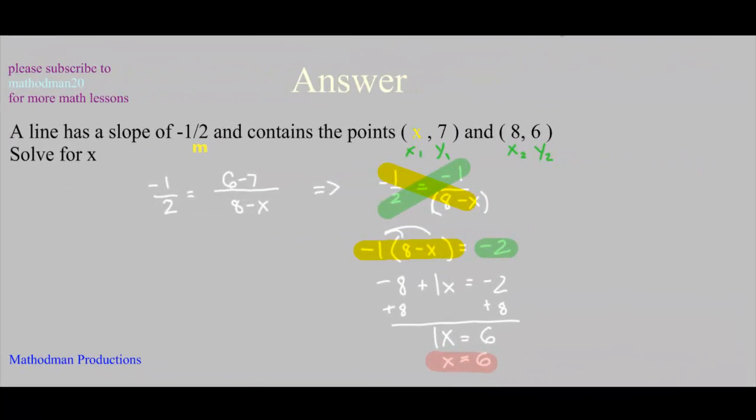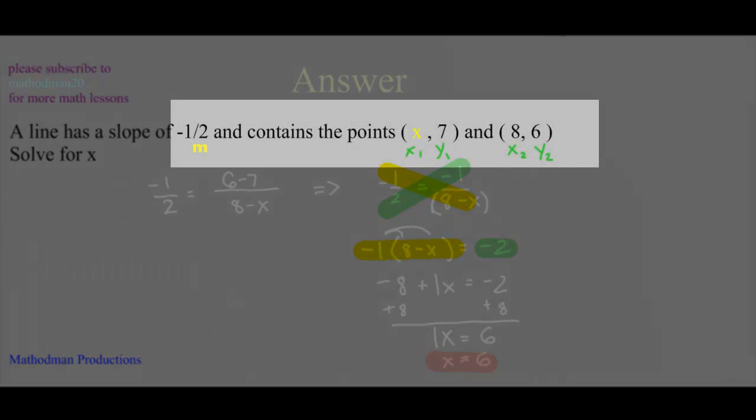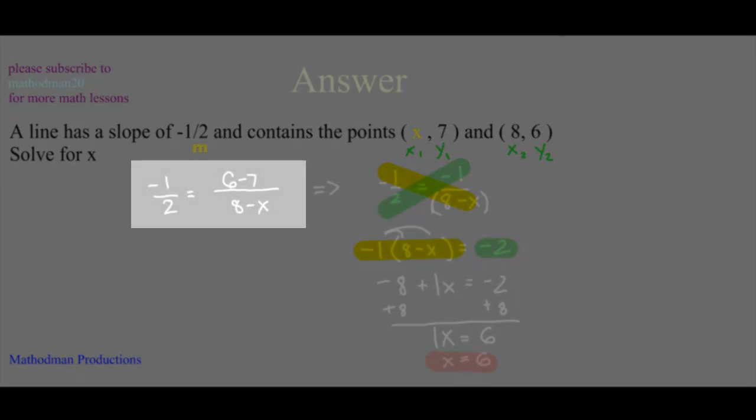Like I mentioned earlier, it's always nice to have everything labeled before you tackle the problem. If you have everything labeled, then all you have to do is plug it into the slope formula. Once you plug it in, you get negative 1 half equals 6 minus 7 over 8 minus x.